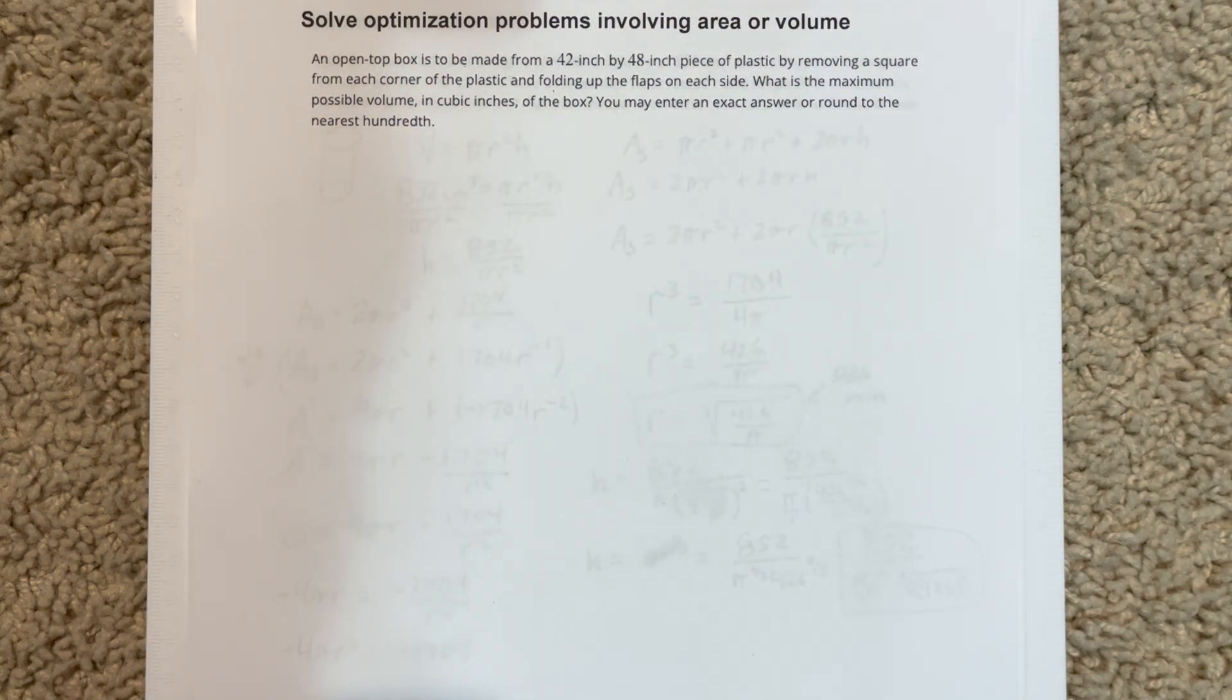In this video, we're going to solve optimization problems involving area or volume. It says, an open top box is to be made from a 42 inch by 48 inch piece of plastic by removing a square from each corner of the plastic and folding up the flaps on each side. What is the maximum possible volume in cubic inches of the box? You may enter an exact answer or round to the nearest hundredth.